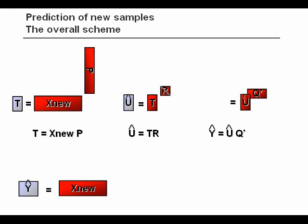And from this inner relation between scores in X and Y, you can predict the Y scores, U, from your T's. If you multiply those Y scores by the loadings in Y, then you get your prediction of Y.